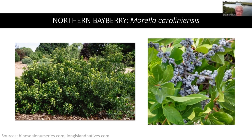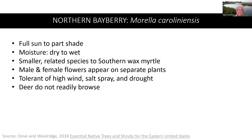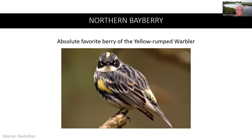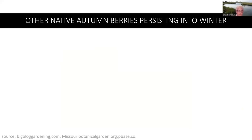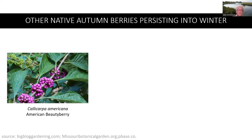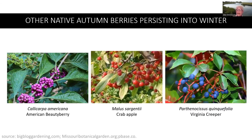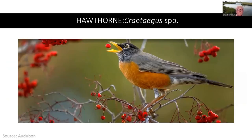The northern bayberry is a fast grower with a relatively short lifespan, related to the southern wax myrtle. Male and female flowers appear on separate plants. It is tolerant of high wind, salt spray, and drought. Deer do not readily browse it. It is the absolute favorite berry of the yellow-rumped warbler. There are several other native berries persisting into winter: the American beautyberry, the crabapple, and the Virginia creeper. The hawthorn is also enjoyed by robins during the winter.